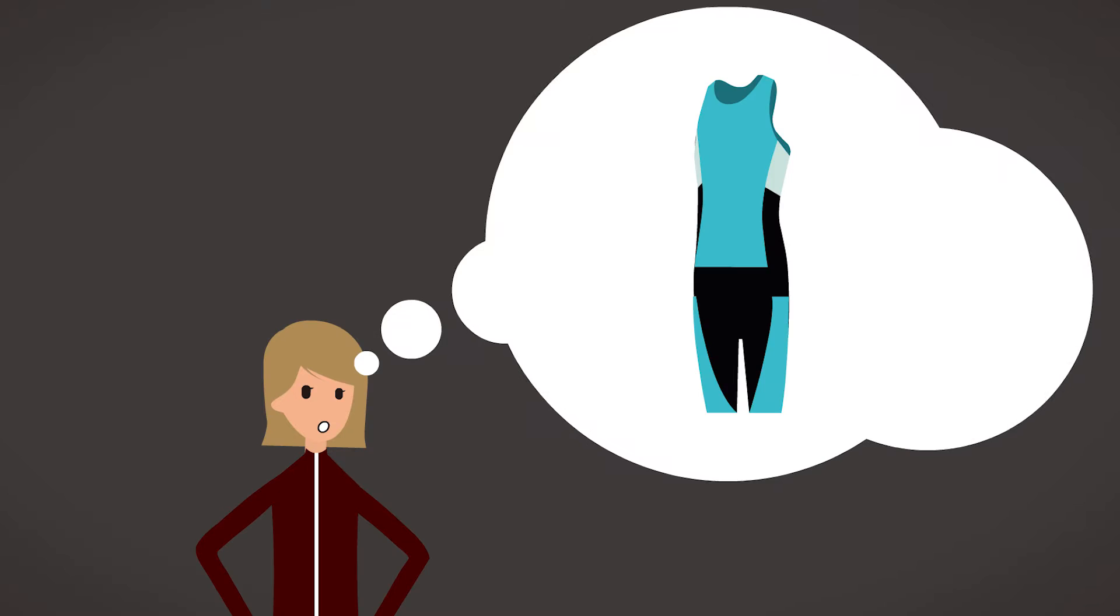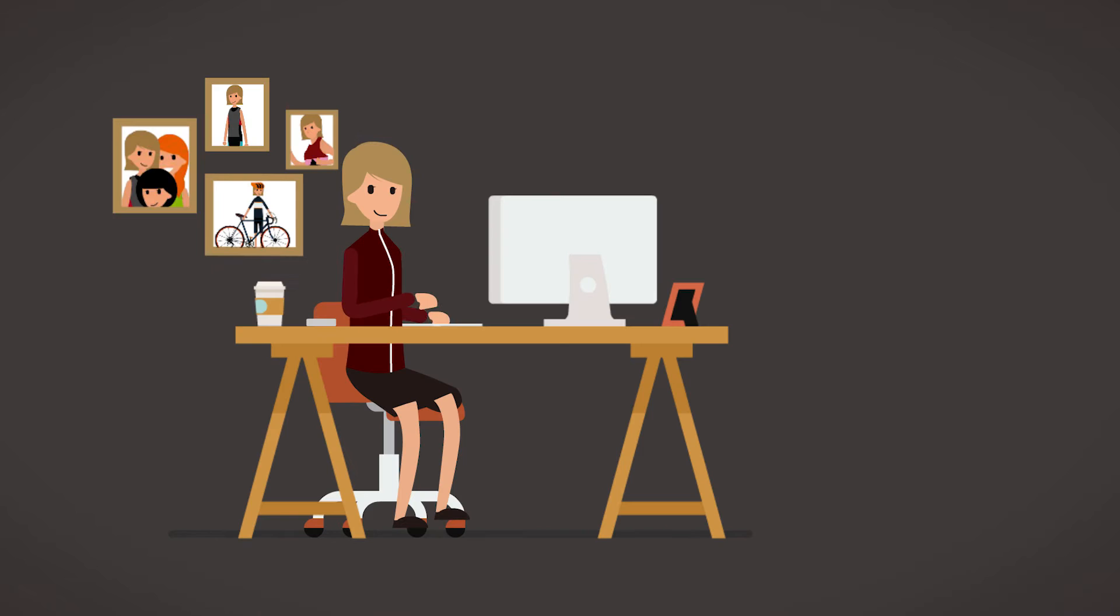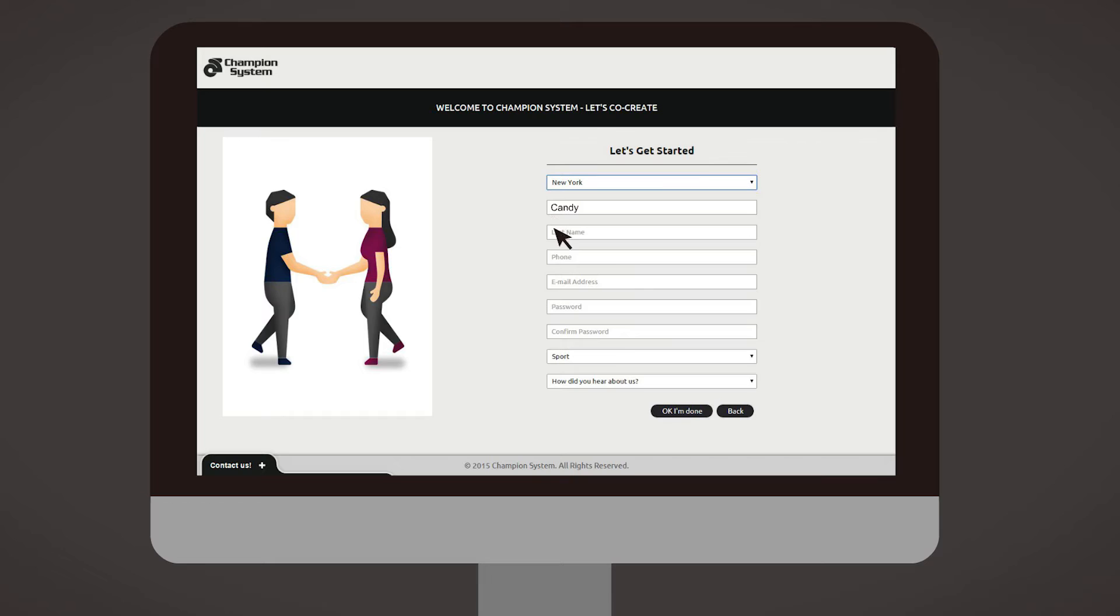Have you ever wondered how to make your own custom design sports clothing? The answer is easy: Champion System. Create your own brand for you and your team. Simply log into the Champion System interactive design lab and get started.